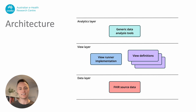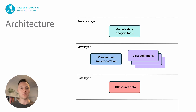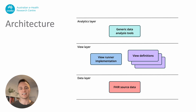The data layer is some sort of representation of FHIR data. In the view layer, you put a view definition and a view runner together to transform FHIR data into views. In the analytic layer, you pick up those views and add further queries and analysis, and possibly make data available to applications, machine learning, or anything else you can imagine. View definitions are intentionally implementation agnostic and don't make many assumptions about what might be appropriate in the data layer or the analytics layer.